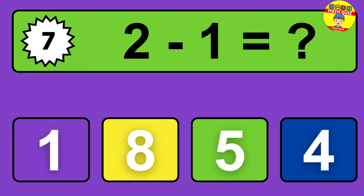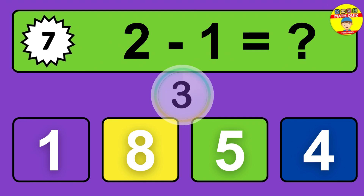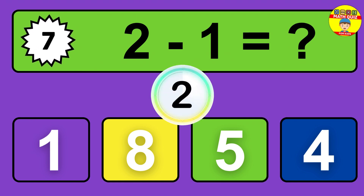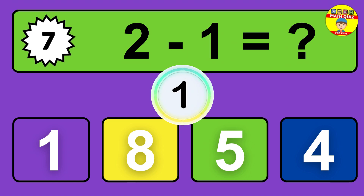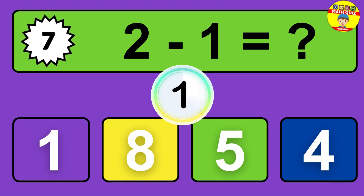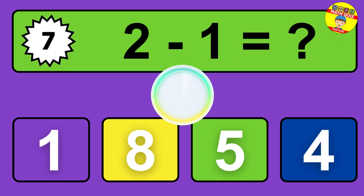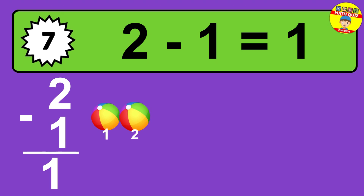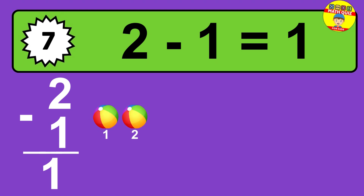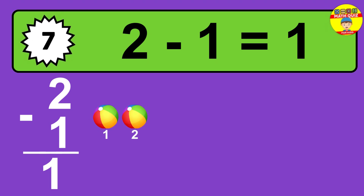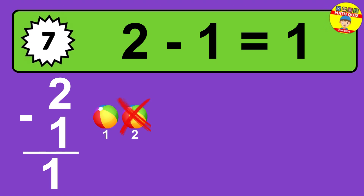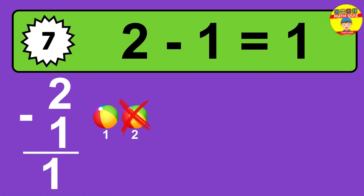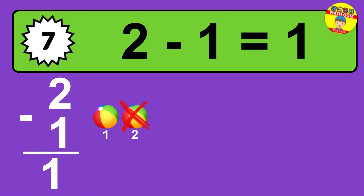Question seven: eight minus five equals what? So the answer is eight minus five is three. Let's count it — one, two, three.